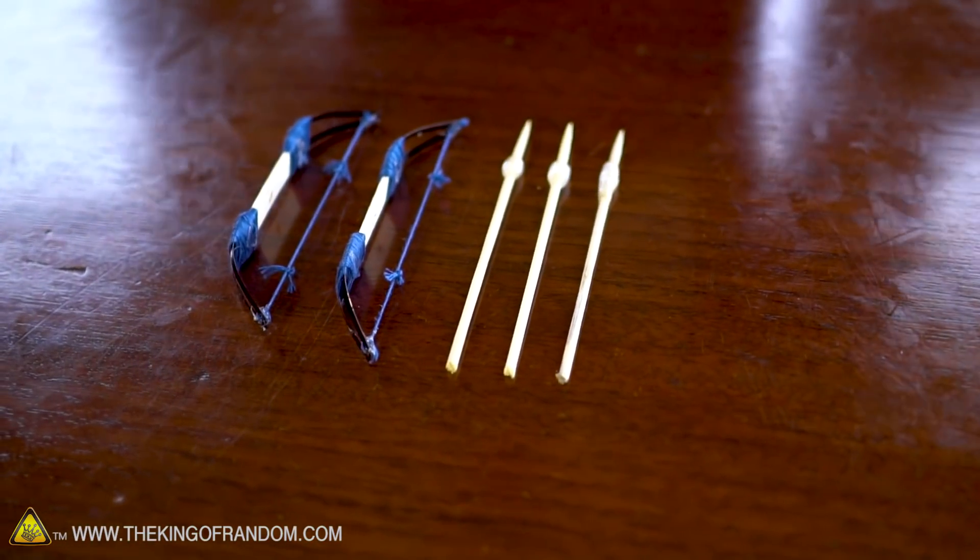What's up guys, welcome back for another desktop project. In today's video we're going to be making something called a mini longbow. These little spear-slinging devices can be made with materials you may already have around the house.